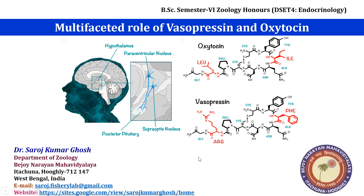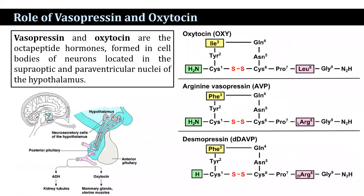I am going to discuss the topic: the multifaceted role of vasopressin and oxytocin. Both vasopressin and oxytocin are octapeptide hormones, and they are formed in the cell bodies of the neurons located in the supra-optic and paraventricular nuclei of the hypothalamus.